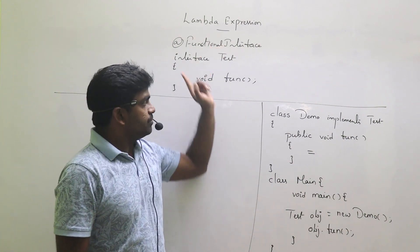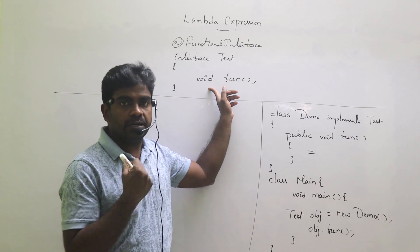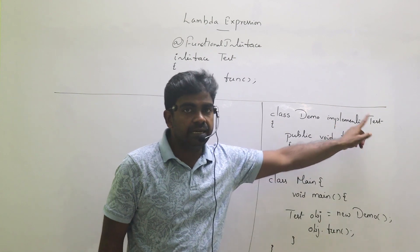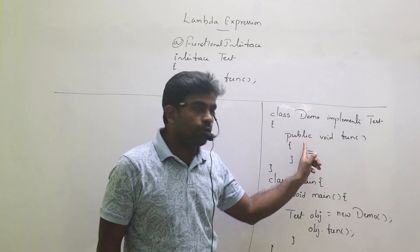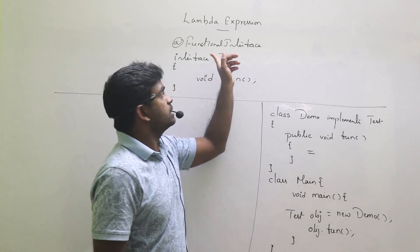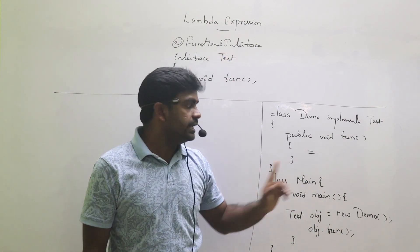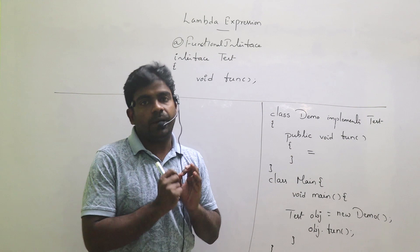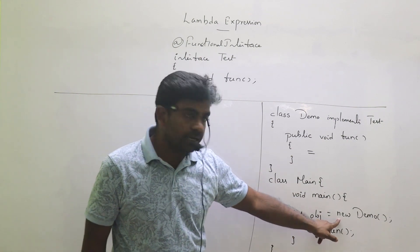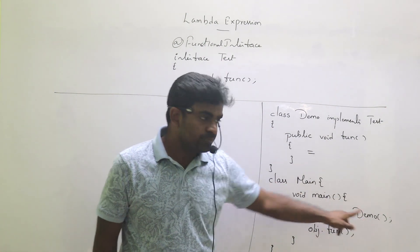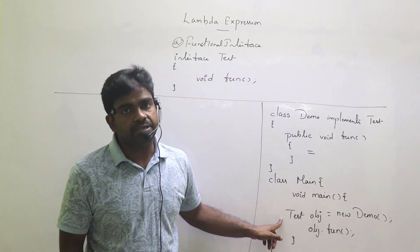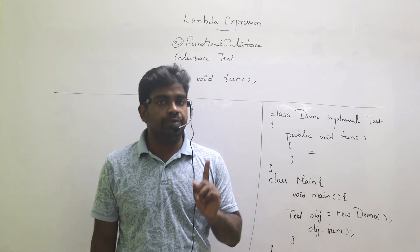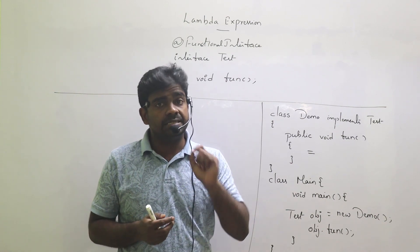Whenever there is an interface which contains abstract method specifications, we use one class. With that class, we implement the interface and override all abstract methods. Since it is a functional interface, there is only one abstract method. When creating the object, we give the reference type as an interface type — that's the upcasting concept. This is the first and regular way.